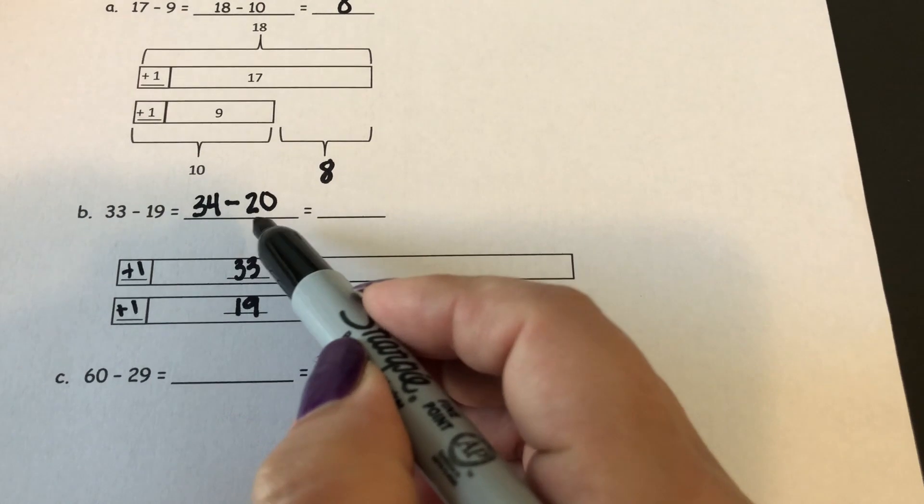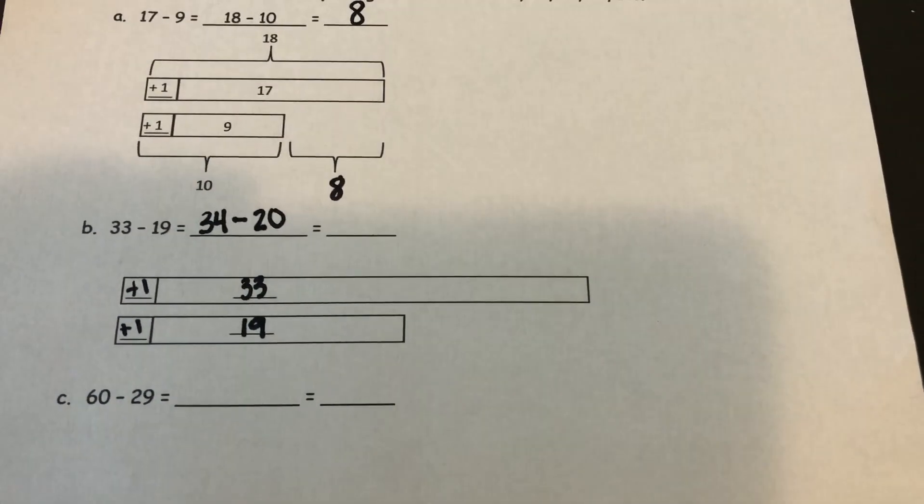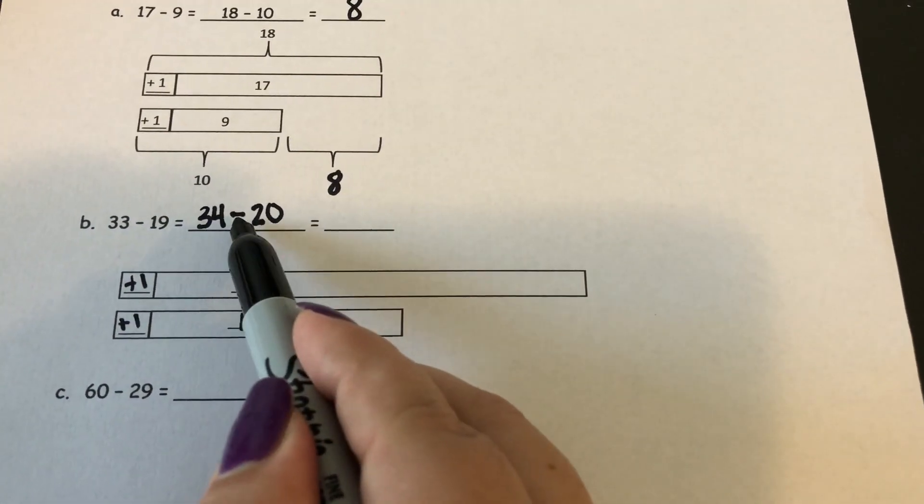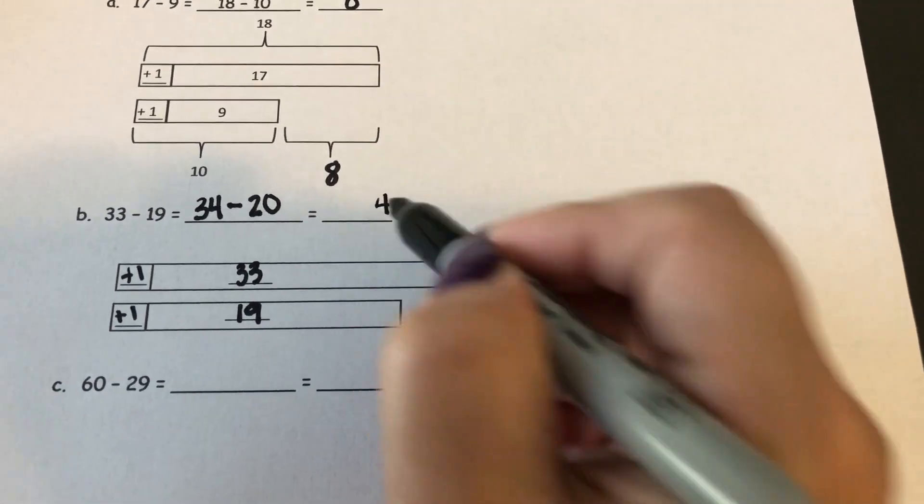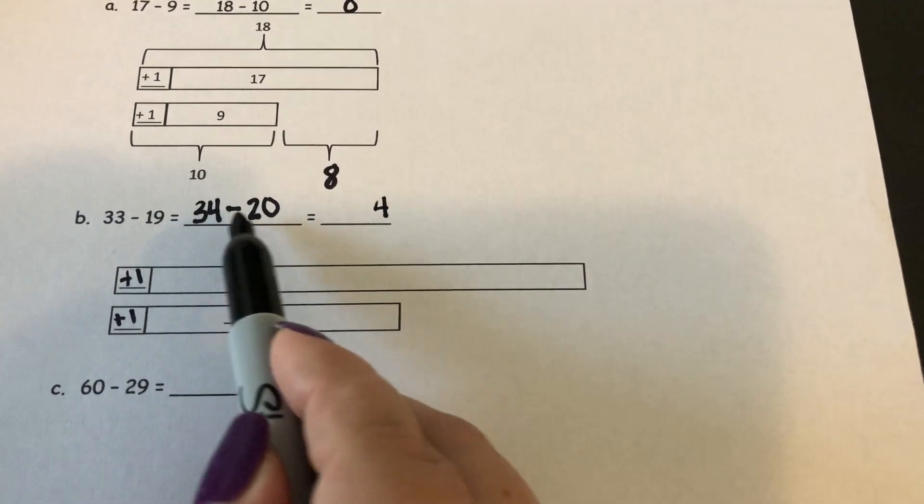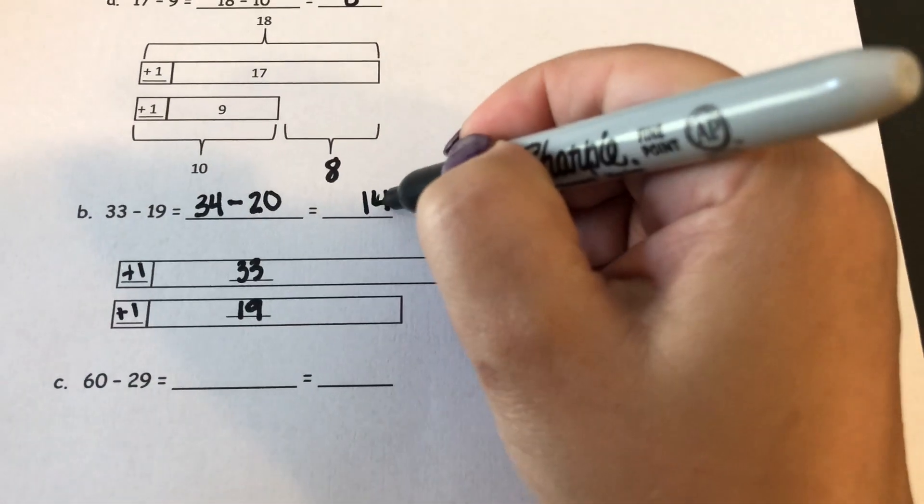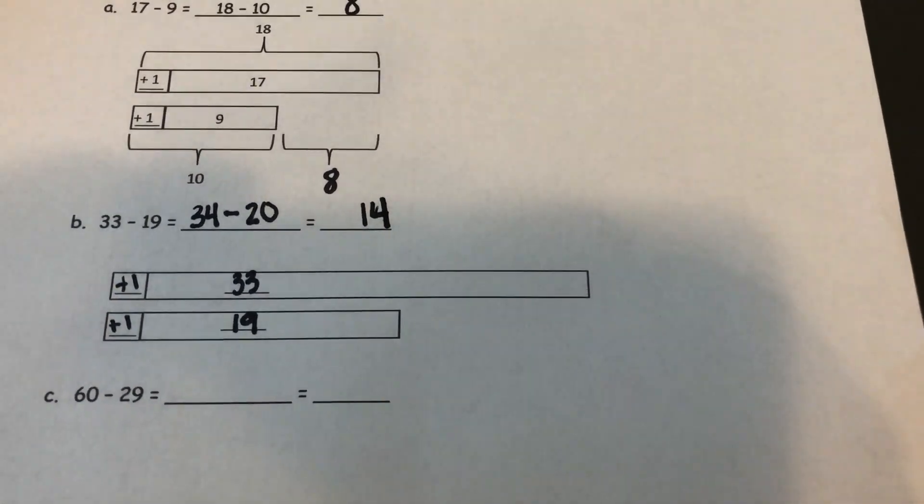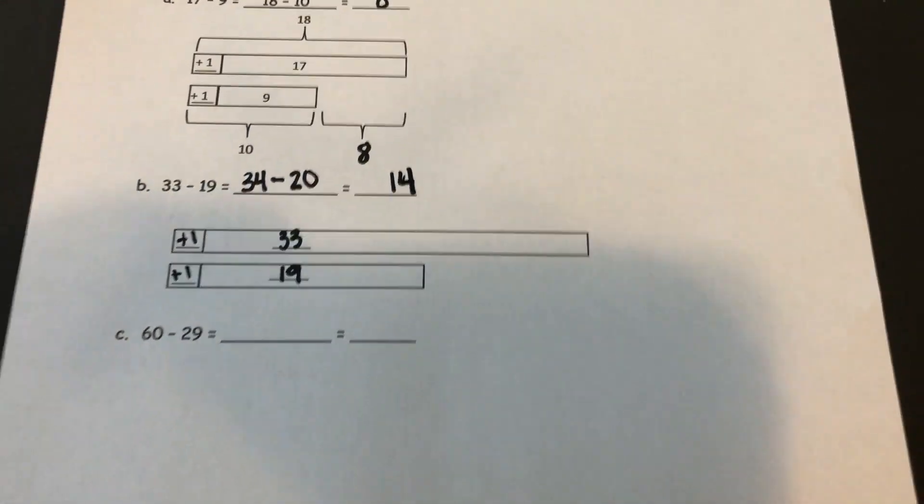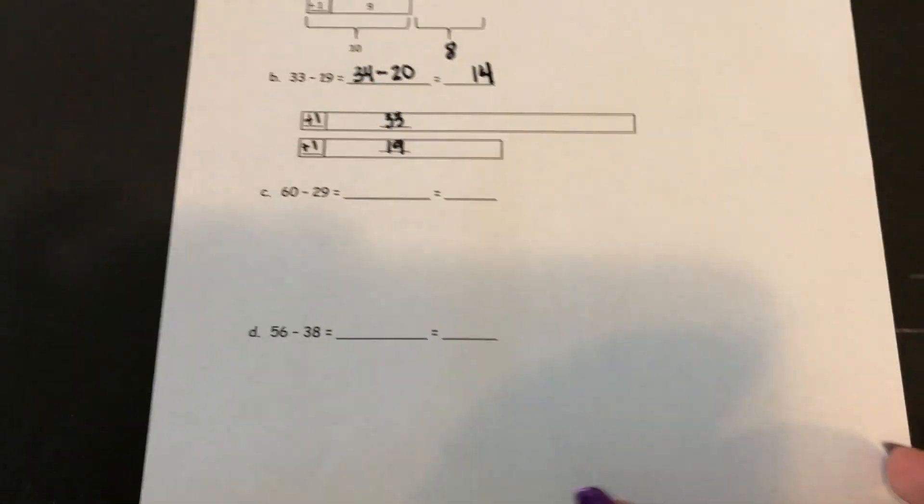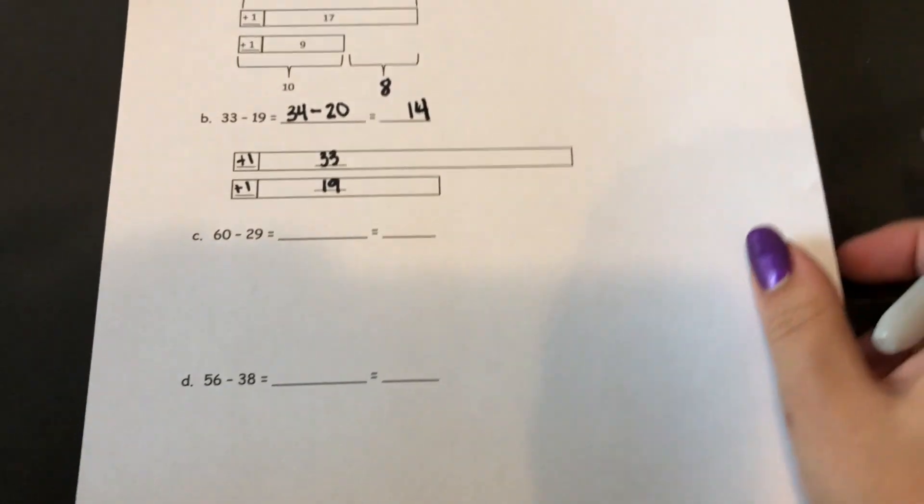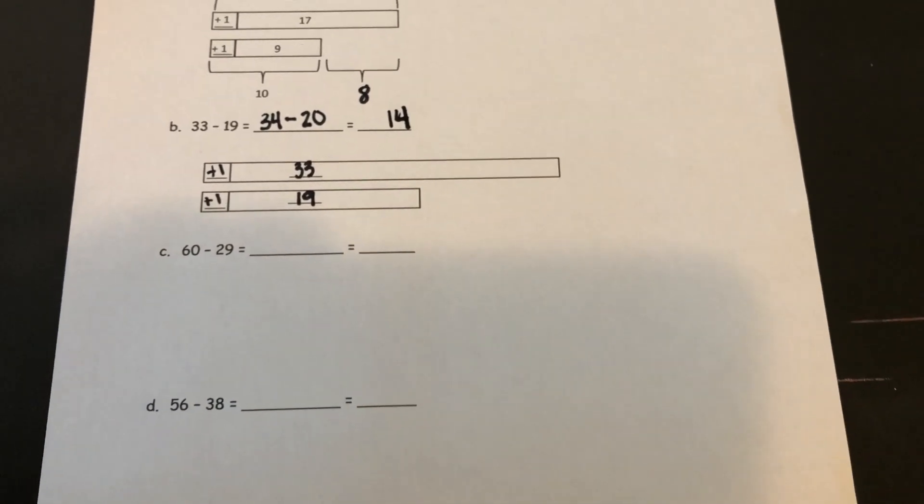And this one's much easier to solve because I can subtract like units. 4 ones minus 0 ones is 4 ones, and 3 tens minus 2 tens is 1 ten. So I know that my answer is 14. And you would do the same type of strategy for C and D, where you would make a new problem so that you can solve it.